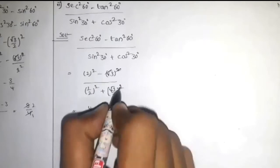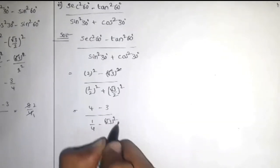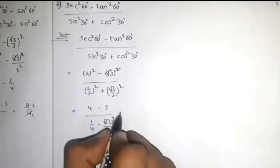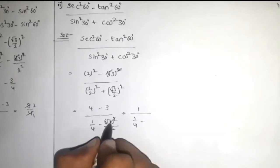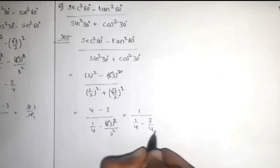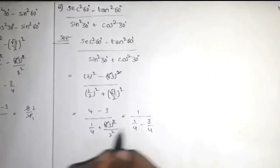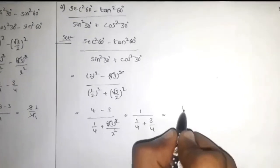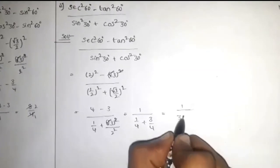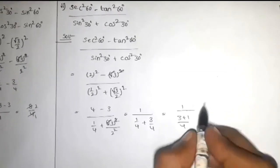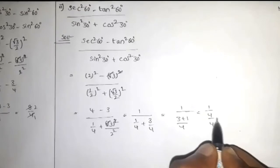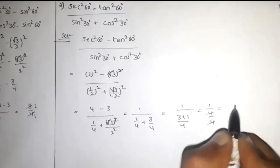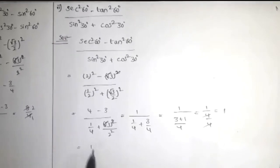So the expression becomes (4 minus 3) divided by (1/4 plus 3/4), which equals 1 divided by 1, and the answer is equal to 1. We have to know an important topic and that is trigonometric ratios of complementary angles.